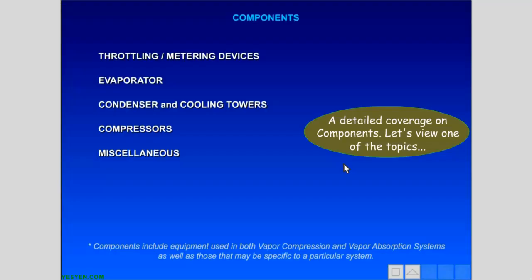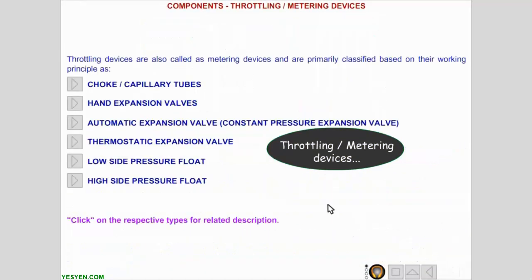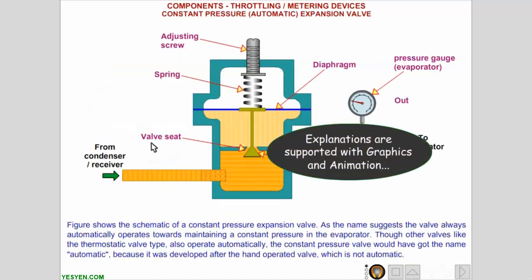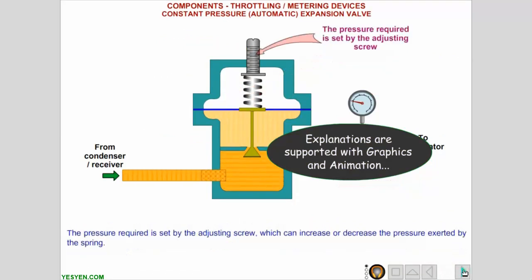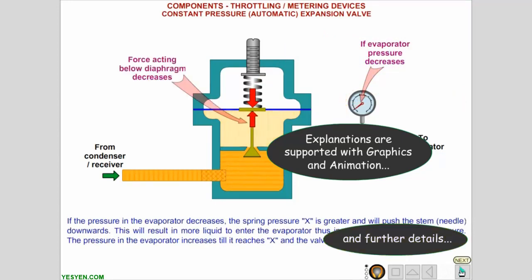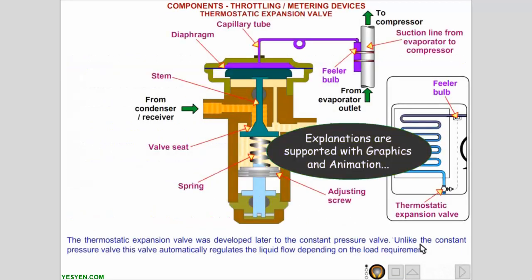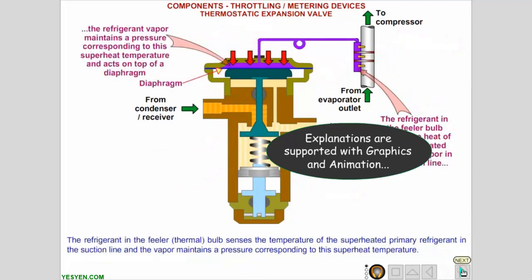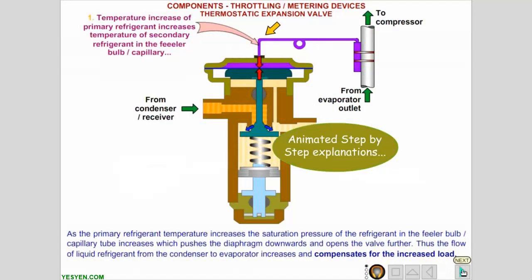The next chapter provides detailed coverage on components. Let's view one of the topics: throttling and metering devices. Explanations are supported with graphics and animation. And further details. Back to index. Explanations are supported with graphics and animation. Animated step-by-step explanation.